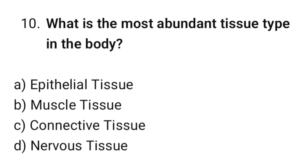Question number 10: What is the most abundant tissue type in the body? The correct option is C. Connective tissue.